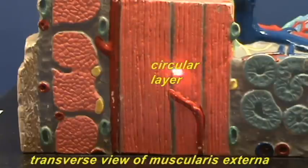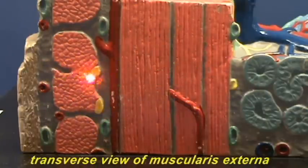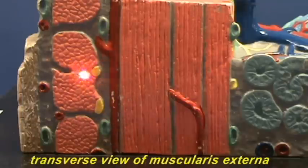This would be the circular layer and this is the longitudinal layer. You can see the yellow represents again nerves of the myenteric plexus.